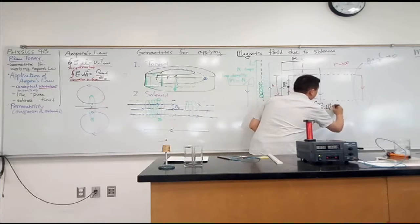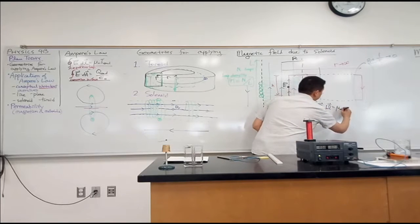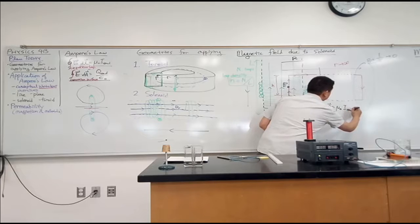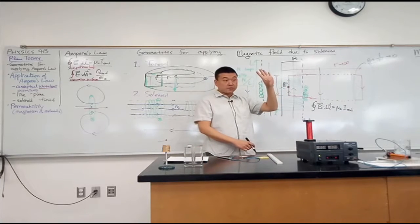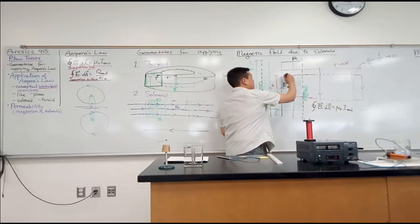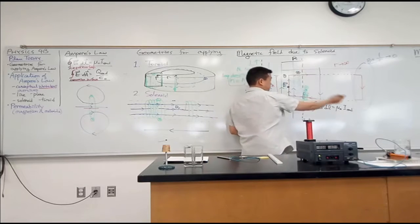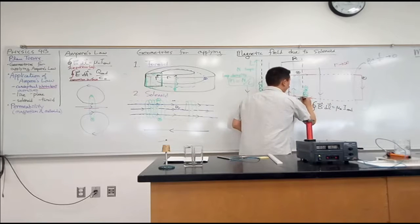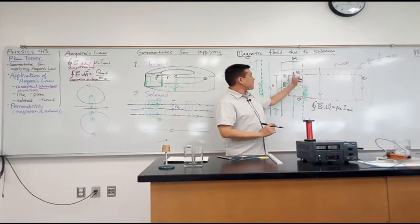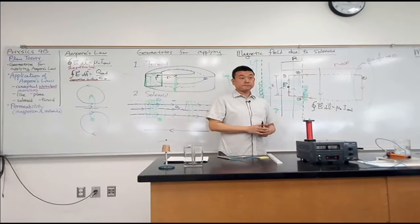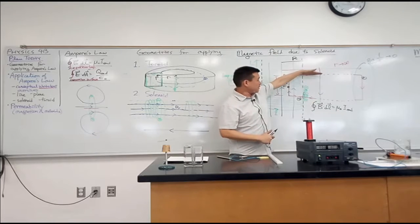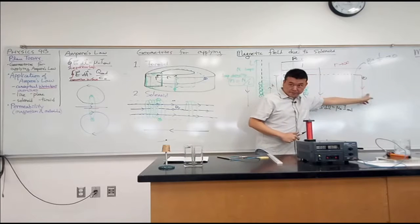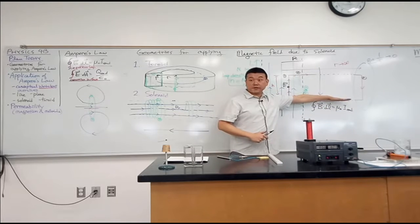B dot dl is equal to mu naught I enclosed. All right, so I have four distinct segments to think about, right? Segment 1, 2, 3, 4. What's B dot dl for segments 2, 3, and 4? Zero for each individual one of them. Because it's perpendicular, because magnetic field is zero, and because it's perpendicular again.